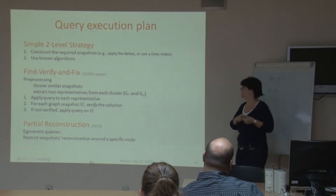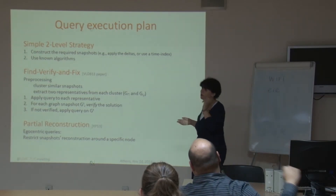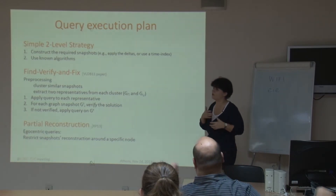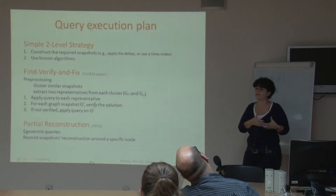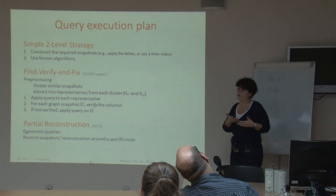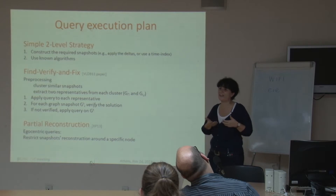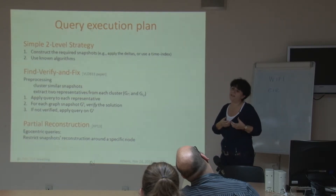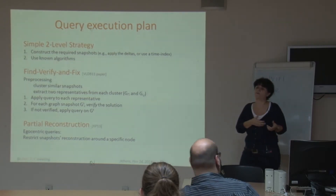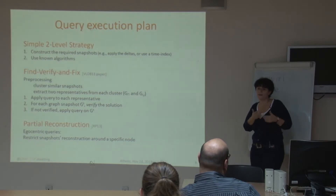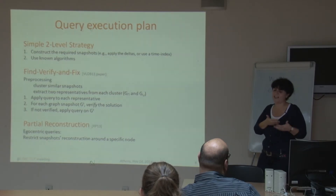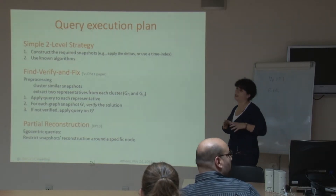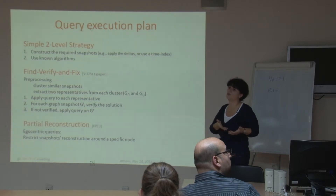You apply your algorithm on the representative of each cluster and try to see for each snapshot in the cluster whether the solution you get is valid or not. If it's valid, fine. If it's not valid, then you go on applying the algorithm on each individual snapshot. One can also think of different ways of doing historical queries — for example, first filter the graph based on non-time-dependent preconditions, then materialize snapshots only for the part of the graph that satisfies your filtering conditions.